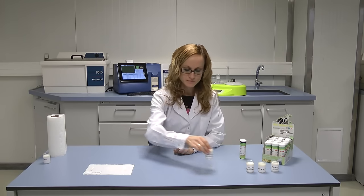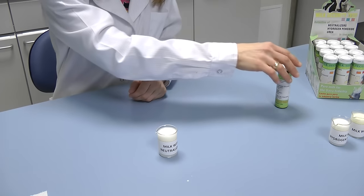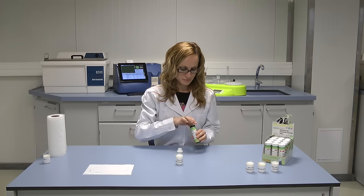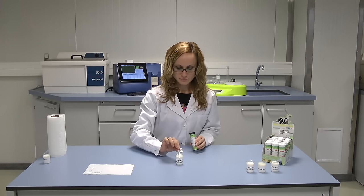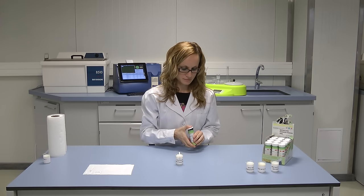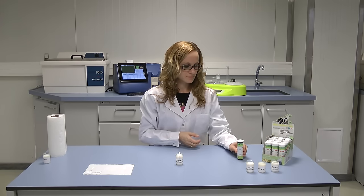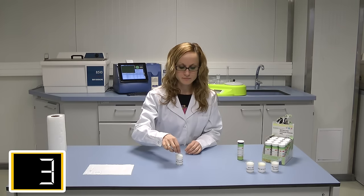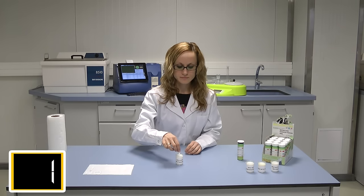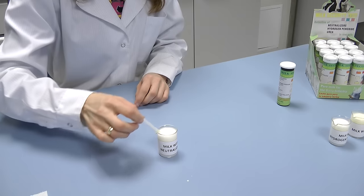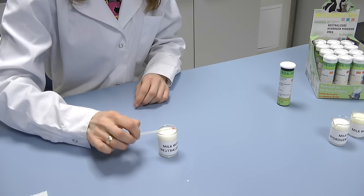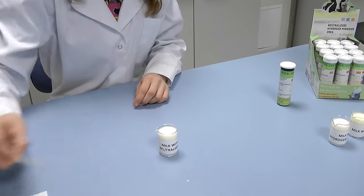Second sample is milk adulterated with neutralizers. The most common neutralizers that are used for adulteration of milk are sodium bicarbonate, sodium hydroxide and sodium carbonate or hydrated lime. They are often added to milk for increasing the lactometer readings. Neutralizers influence the values of titratable acidity and pH of milk. That's why they must be checked in the milk sample.